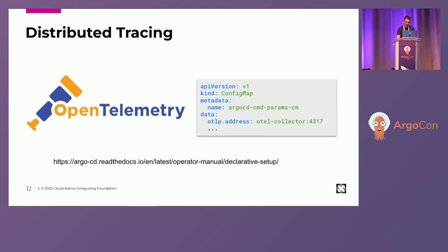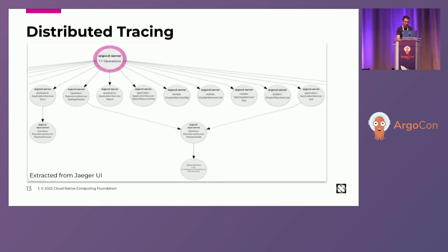You don't have to memorize the URL. Just remember that we have a section in the Argo CD documentation called Operator Manual, and inside you have a page called Declarative Setup. Inside that page you'll find links to all the config maps available.